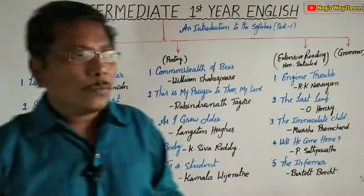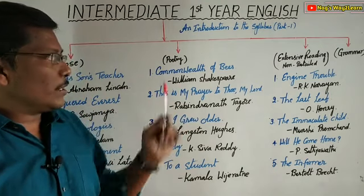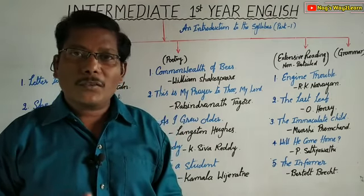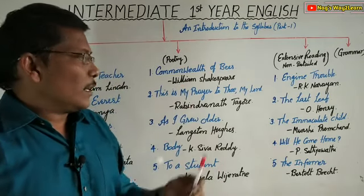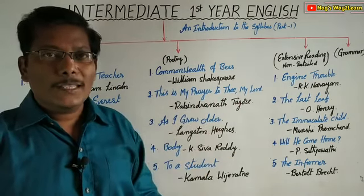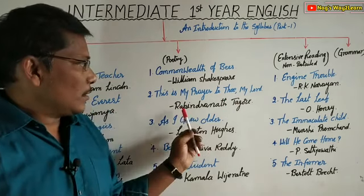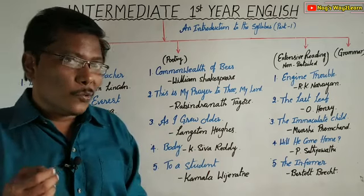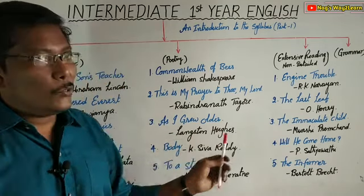Coming to the Poetry section, here also we have five poems. The first one is 'Common Wealth of Bees', written by William Shakespeare. And the second poem is 'This is My Prayer to Thee, My Lord', written by Rabindranath Tagore.